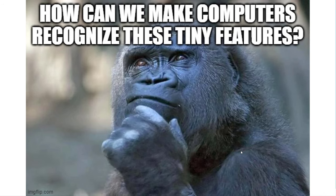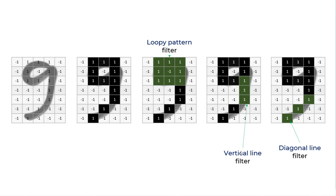So how can we make computers recognize these tiny features? We use the concept of filter. In case of 9, we have three filters. The first one is the head which is a loopy circle pattern. In the middle, you have vertical line. In the end, you have diagonal filter.